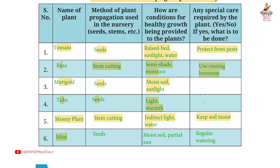Sixth plant: mint. Method of propagation: seeds. Conditions provided: moist soil, partial sun. Special care required: regular watering.